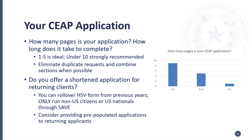The first thing you're going to want to look at is your CIAP application. How many pages is your application, and how long does it take someone to complete one? Go ahead and complete one yourself to see. This graph shows how many pages high-performing subrecipients' applications are, and as you can see, the majority have a one to five-page application. Under 10 pages is strongly recommended by the department. Take some time to look at your application and see which areas you might be requesting duplicate information, which sections can be combined, and any other ways you can streamline it. Also keep in mind you do not have to have your applicant sign in multiple places — one signature on the application will suffice.